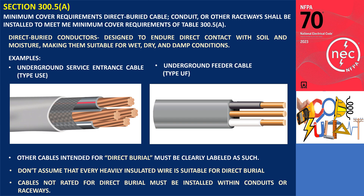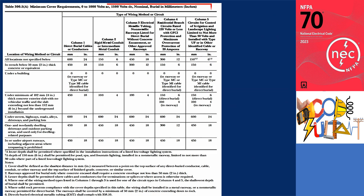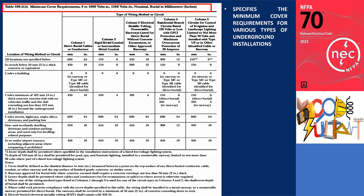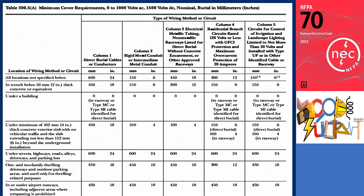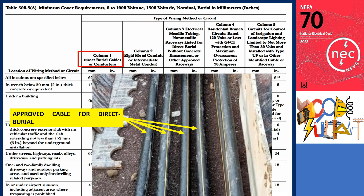Cables not rated for direct burial must be installed within conduits or raceways. Table 300.5(a) of the National Electrical Code specifies the minimum cover requirements for various types of underground installations for 0 to 1000 volts AC, 1,500 volts DC nominal, with burial measurements in millimeters and inches. It details the depths at which different electrical conductors and raceways must be buried to ensure safety and compliance. Table 300.5(a) contains five different types of wiring methods or circuits. Column 1 is for direct burial cables or conductors — cables not installed in conduits or any raceways.